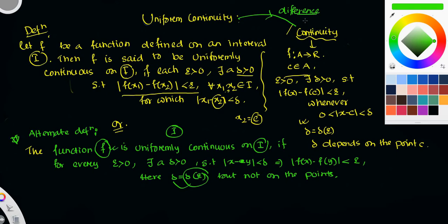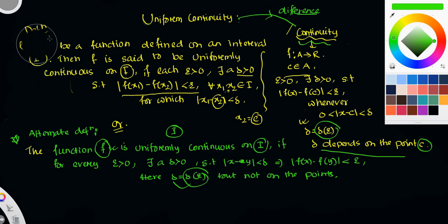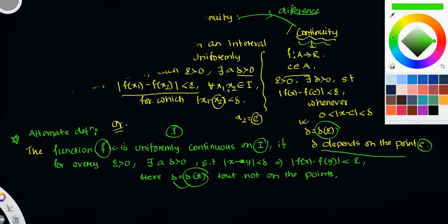But in case of continuity, delta depends on epsilon and also on the point c. So this is all about the difference between a uniformly continuous function and a continuous function. A uniformly continuous function has a geometrical interpretation.